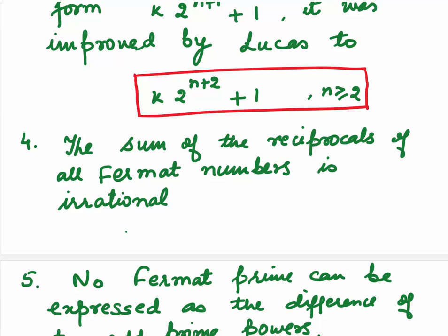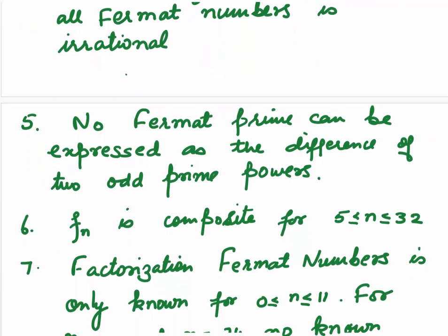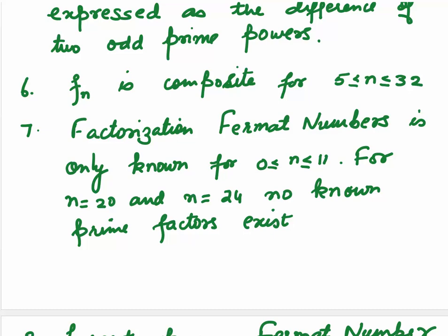Fourth one. The sum of reciprocals of all the Fermat numbers is always irrational. No Fermat prime can be expressed as the difference of 2 odd prime powers. This was the fifth point. Sixth, Fn is composite for all values of n lying between 5 to 32 including 5 and 32. Factorization of Fermat numbers is only known for n is greater than or equal to 0 to less than or equal to 11. For n is equal to 20 and n is equal to 24.